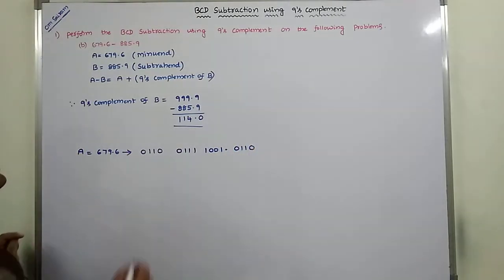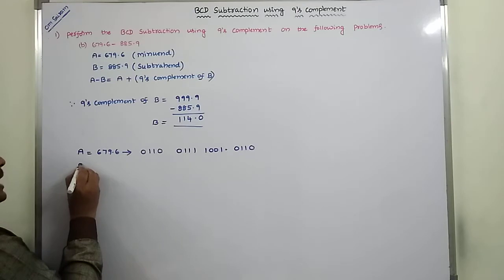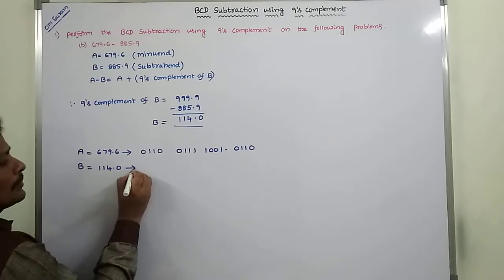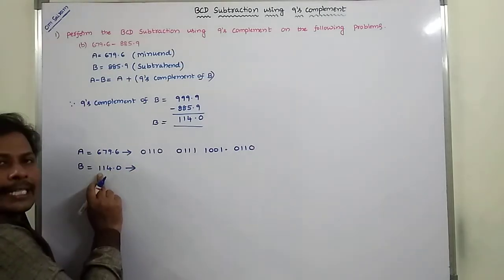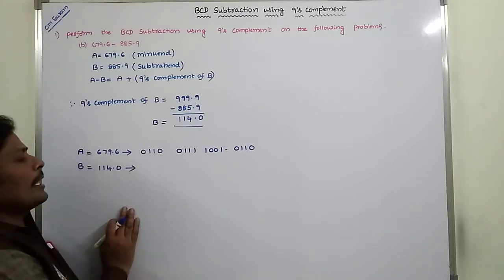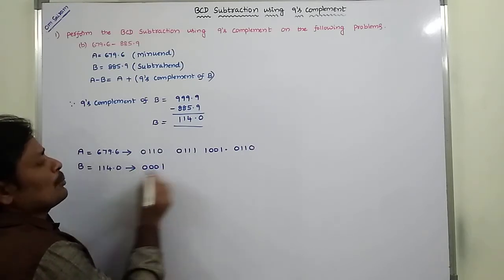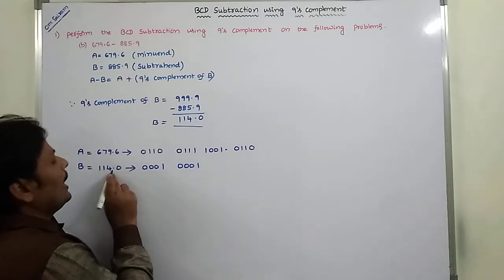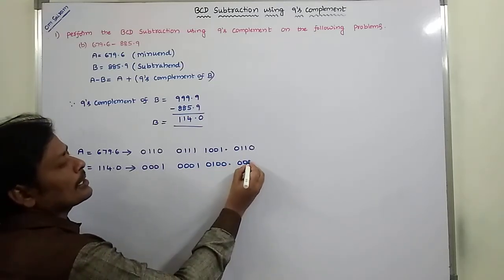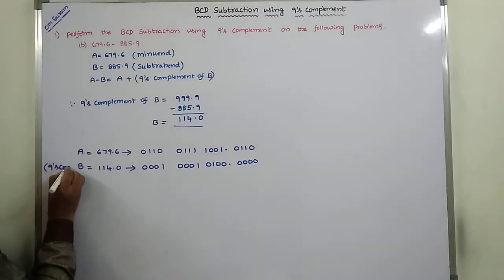Next, the nice complement of B is 114.0. Each digit is represented in a 4-bit binary group: the first 1 is 0001, the next 1 is 0001, 4 is 0100, and after the decimal point 0 is 0000. This is the BCD representation of the nice complement of B.